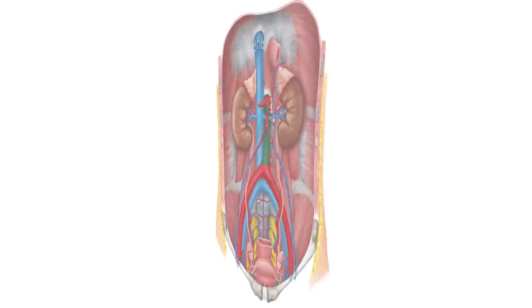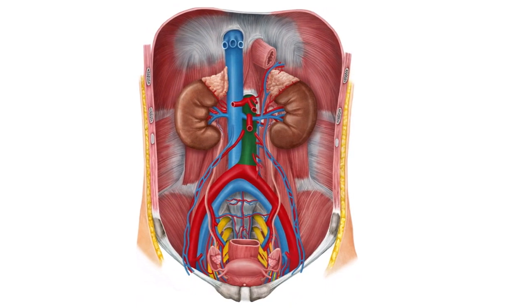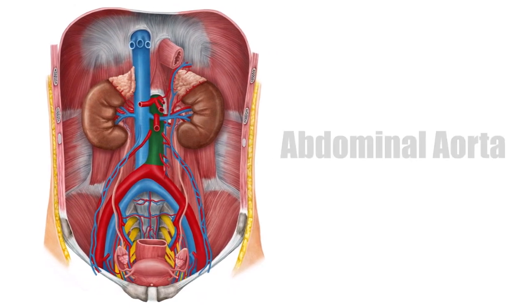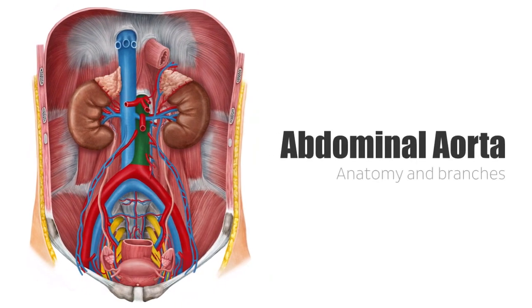Aorta, its anatomy, and branches. It is a section of the aorta which is the largest blood vessel in the body. It is an artery that directly arises from the heart itself and descends through the thorax and into the abdomen. All the arteries of the body, save the pulmonary arteries, stem from the aorta or one of its main branches.